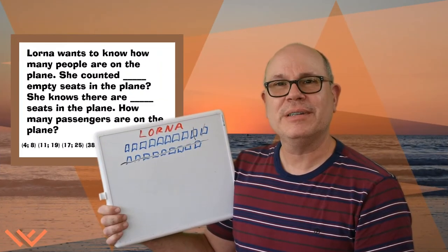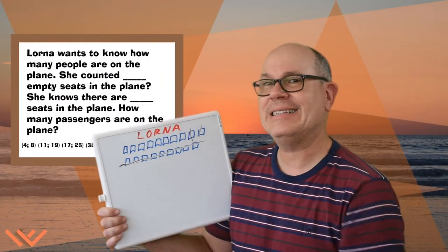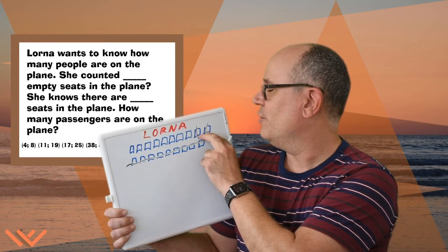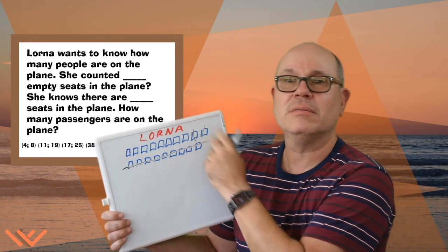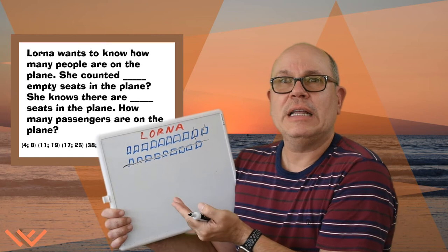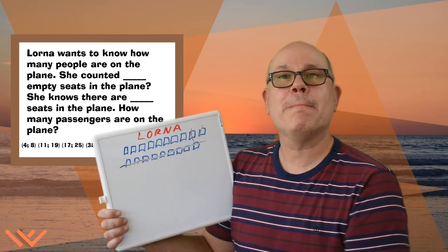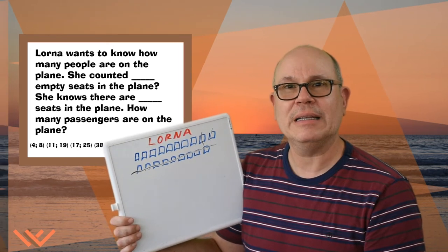Also, since I knew that this top row had 10 seats in it and there are 2 that were empty, all I needed to do was just say 10 minus 2 is equal to 8.